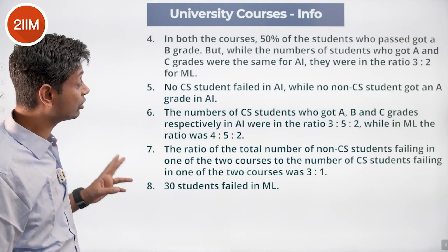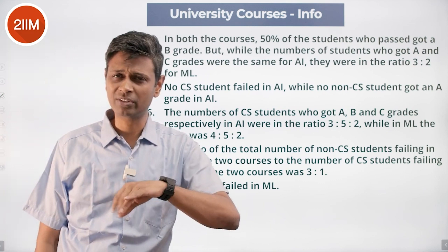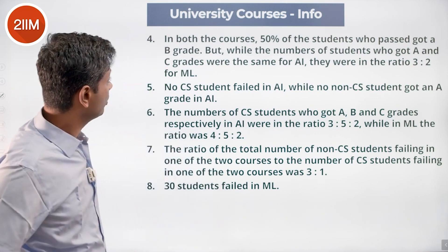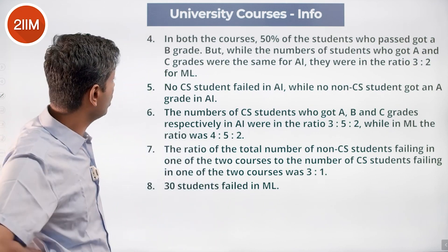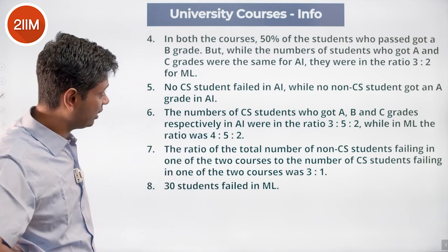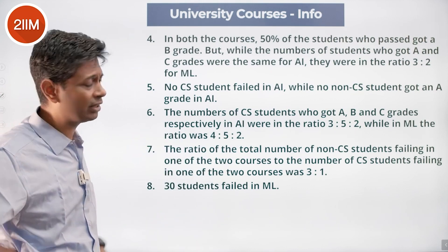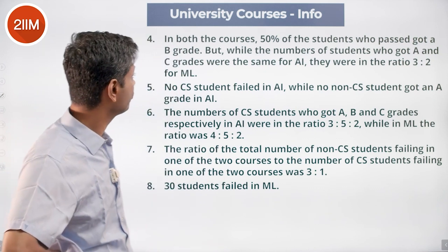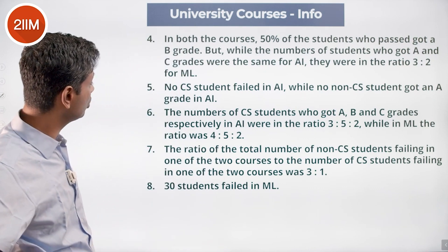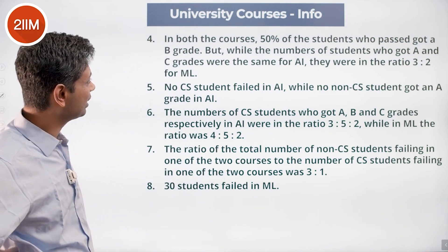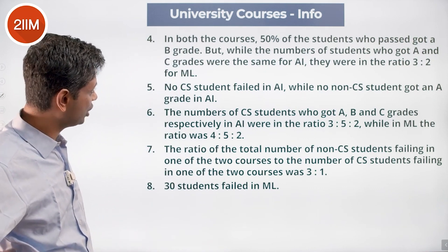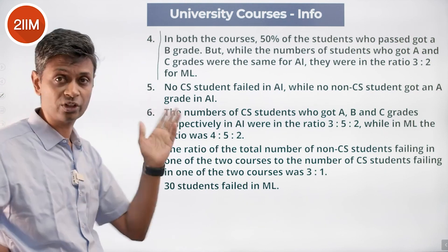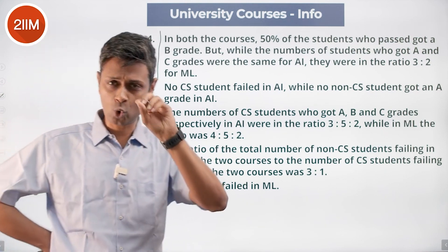50% who passed got a B grade — passed meaning cleared, not F. While the number of students who got A and C grades were the same for AI, they were in the ratio 3:2 for ML. This applies overall for the course, not specifically for CS or non-CS students.